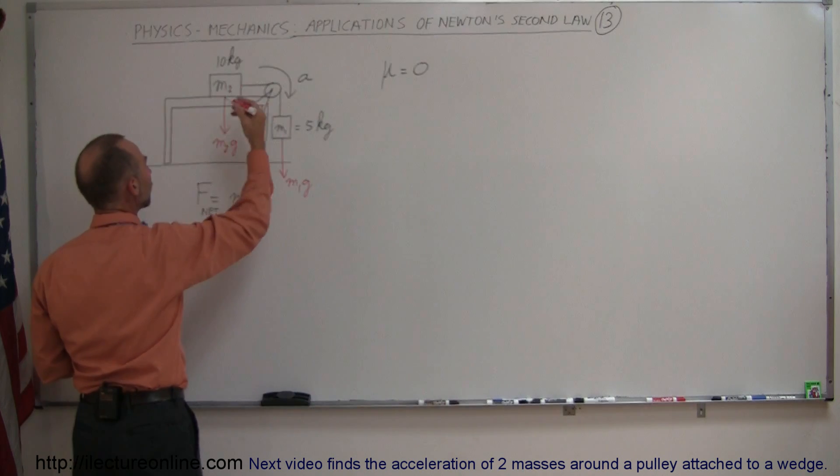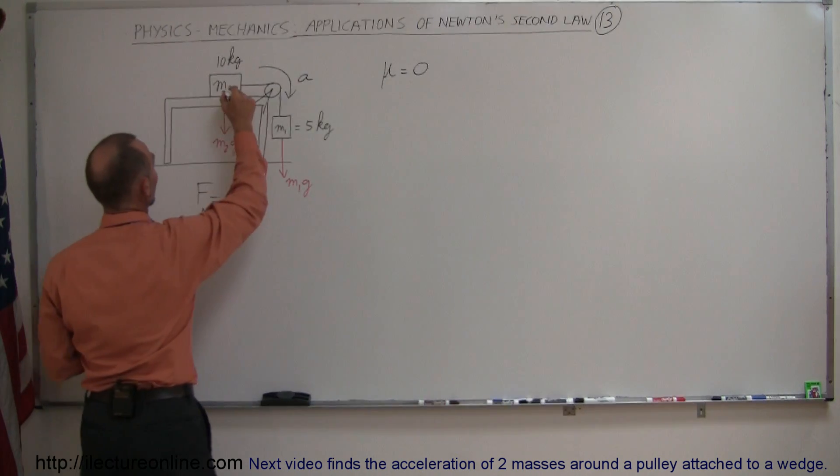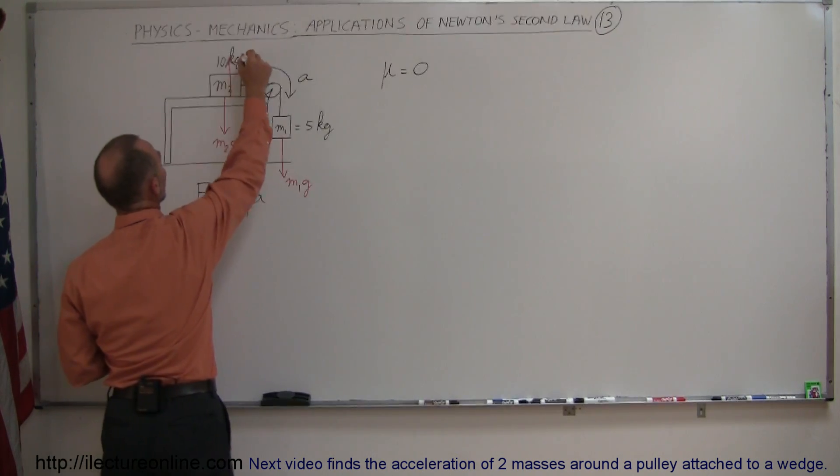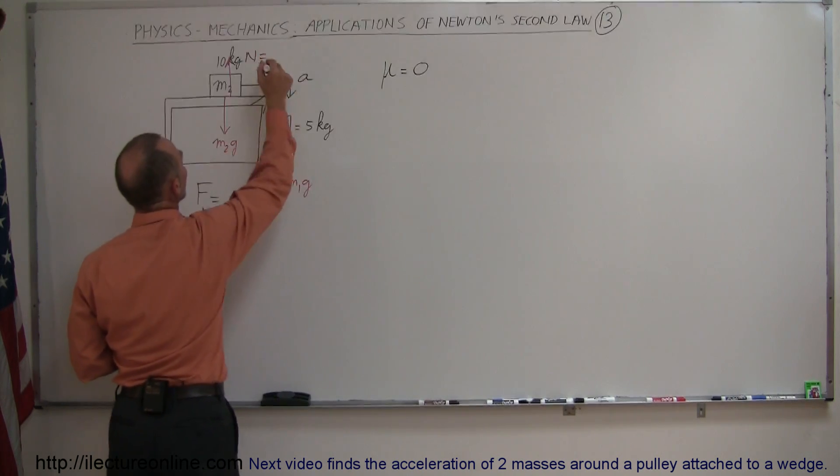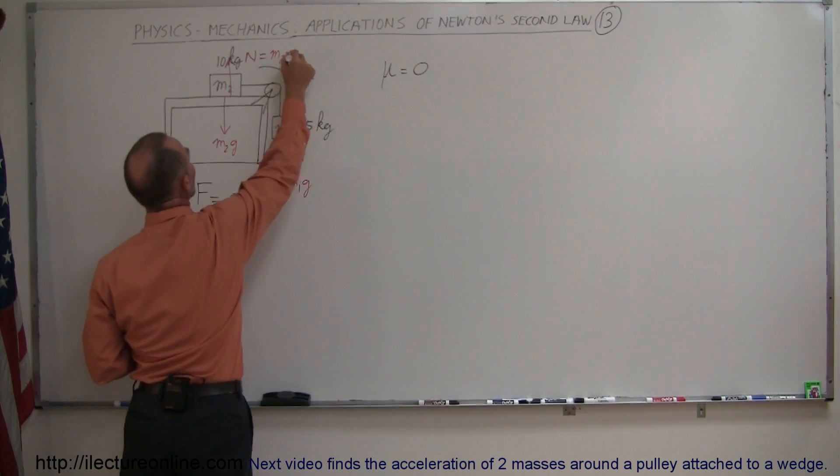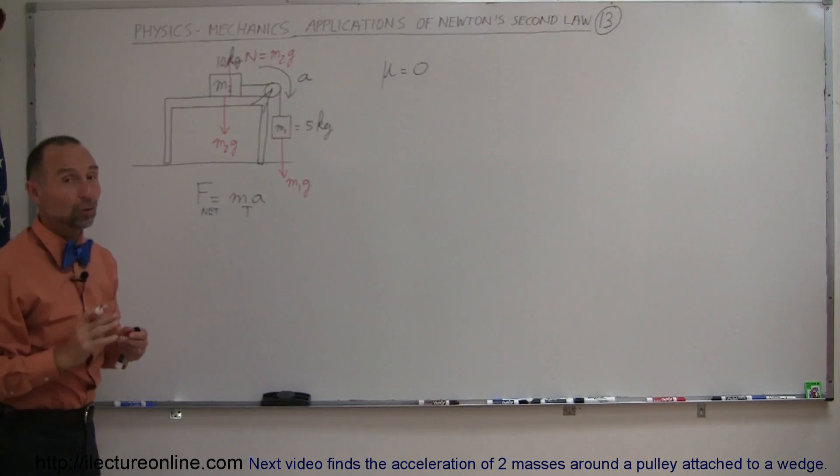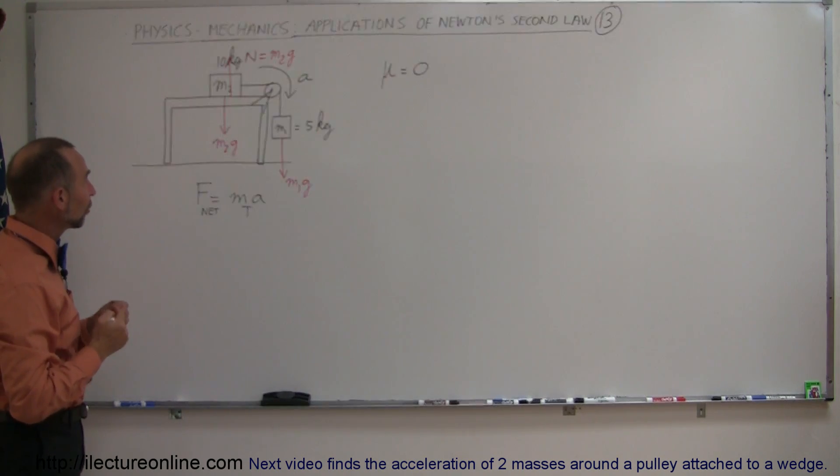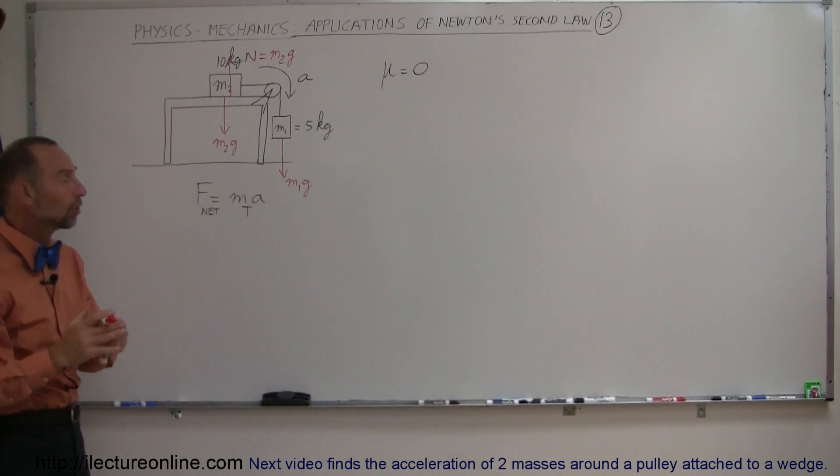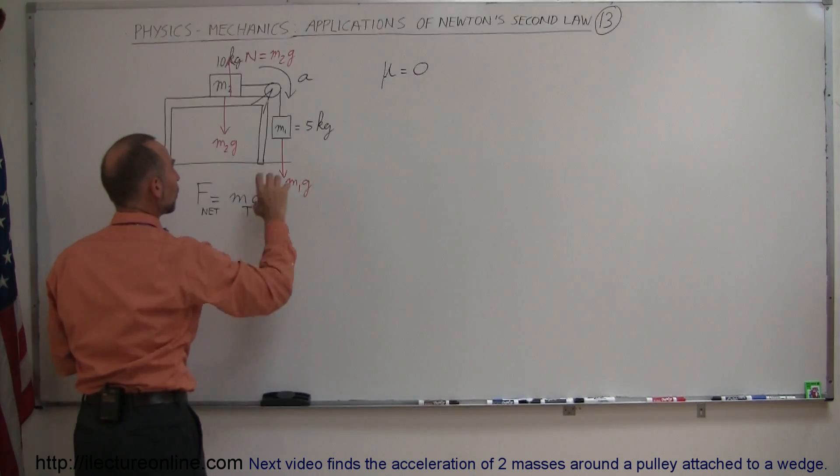And of course then we have the normal force. Newton's third law dictates that this is a reactionary force pushing back up. That's the normal force, and the normal force will be equal in magnitude to M2G and opposite in direction. So those two forces cancel each other out, and so that means there's only one force, one net force acting on the whole system, which is M1G.